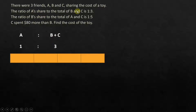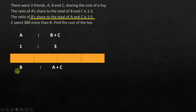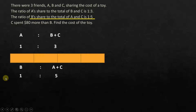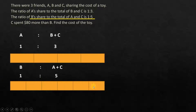For the second condition: the ratio of B's share to the total of A and C is 1:5. We can write this as B to the total of A plus C equals 1:5. Again, we represent this in terms of diagrams — B will have 1 unit and 5 units go to A plus C.